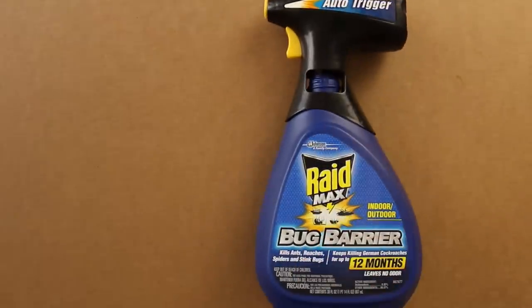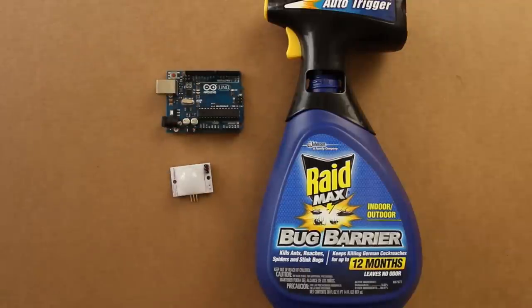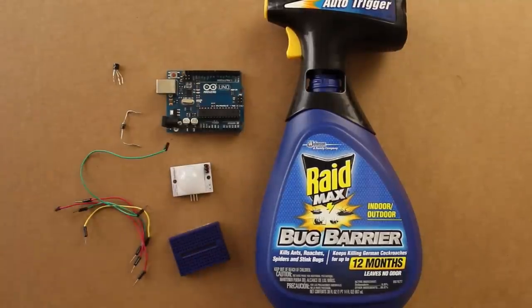Here's what you're going to need. A RAID Auto Trigger Bug Repellent Sprayer, an Arduino, a PIR motion sensor, an NPN transistor, and a diode. You also need some miscellaneous wires and a breadboard.